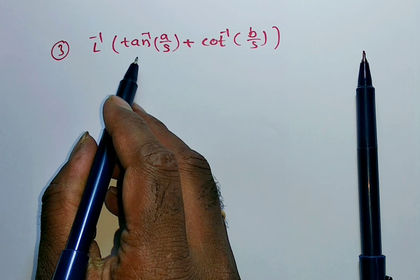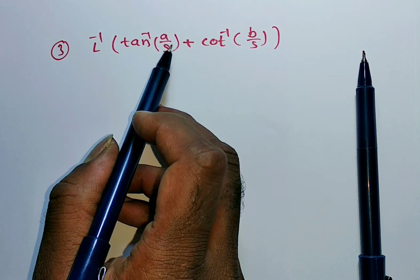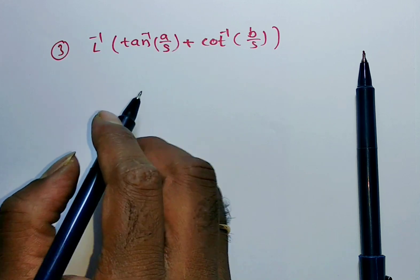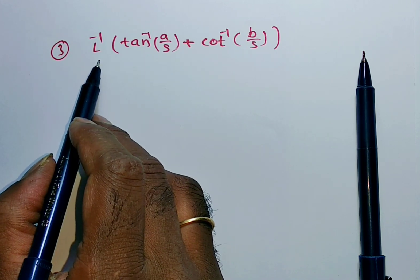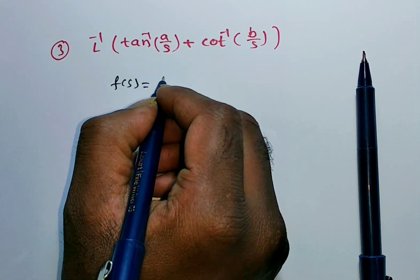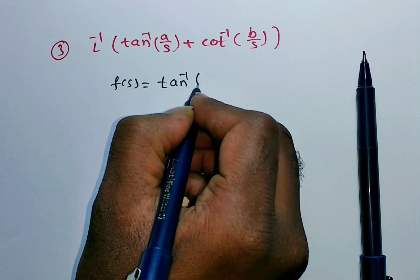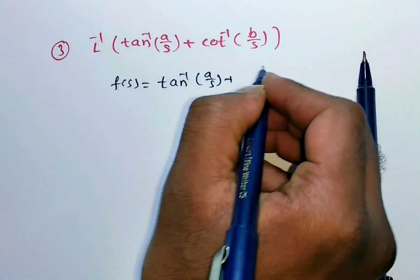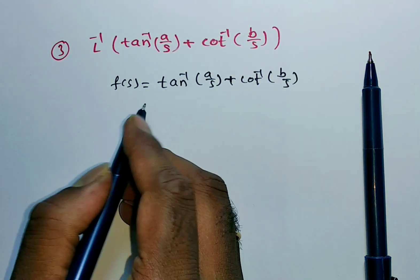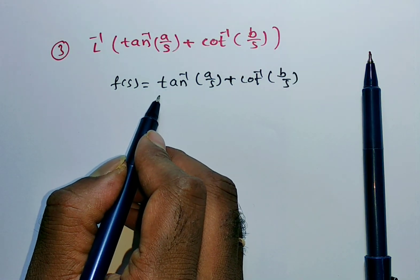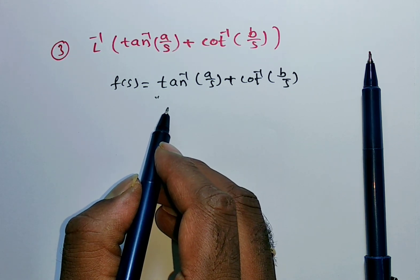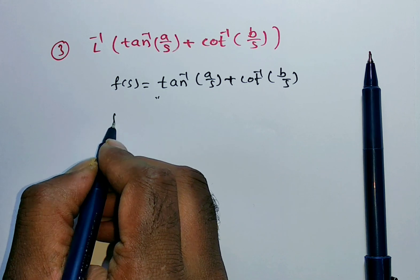For the third problem, L inverse of tan inverse of A by S plus cot inverse of B by S. This is in the form L inverse of F of S. So F of S equals tan inverse of A by S plus cot inverse of B by S. Applying inverse Laplace directly, there is no basic formula for tan inverse, so we go for differentiation.